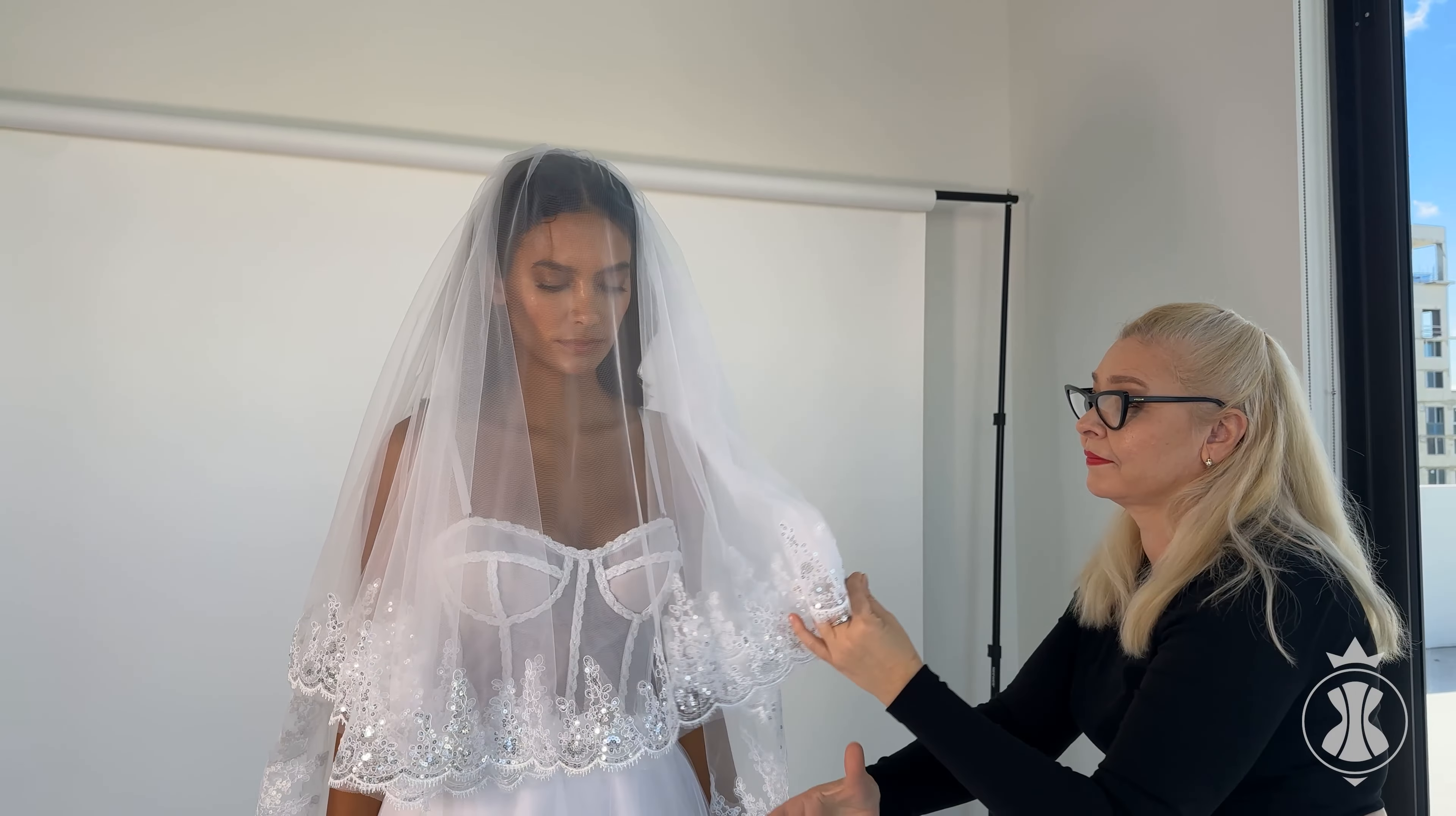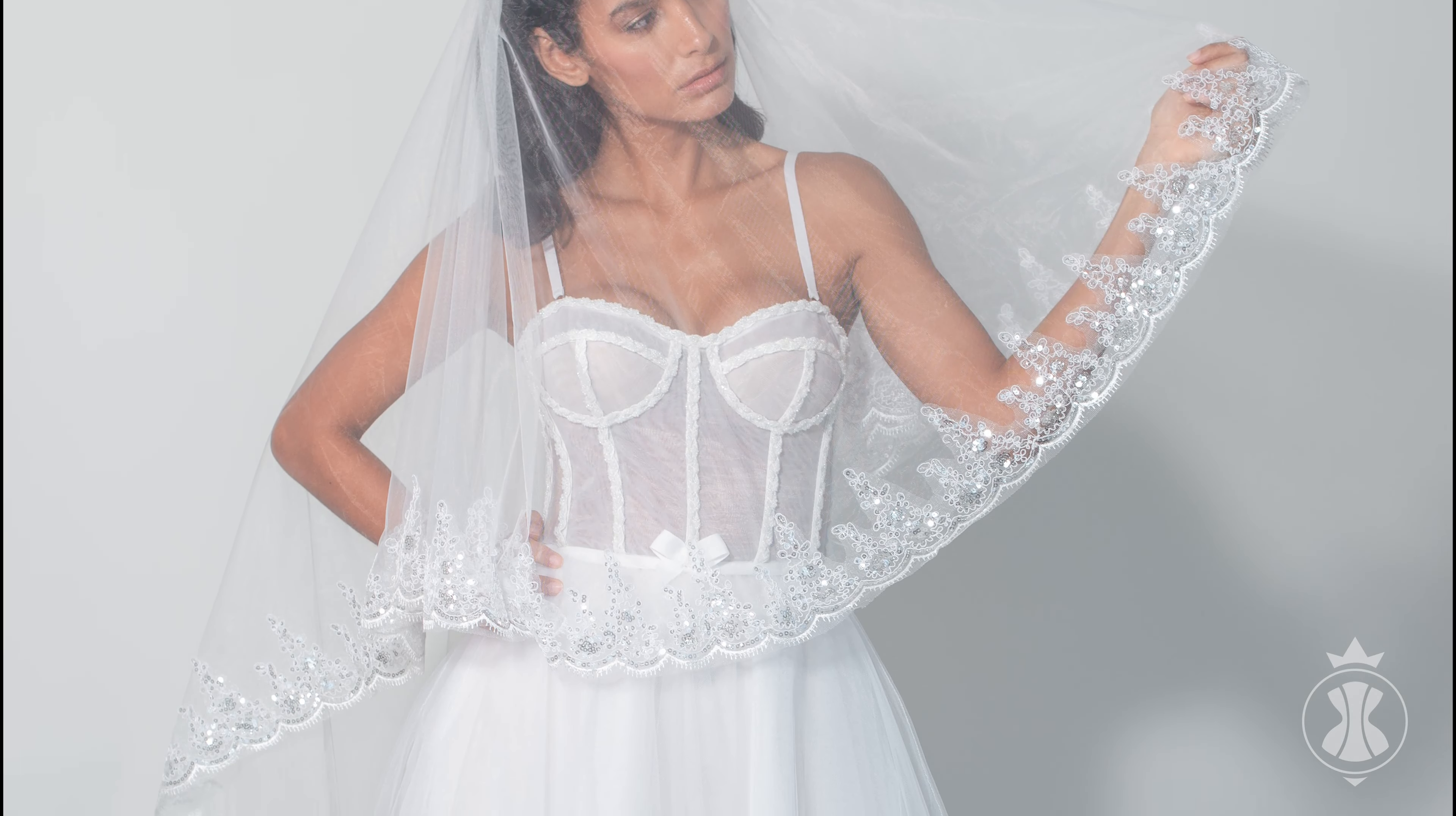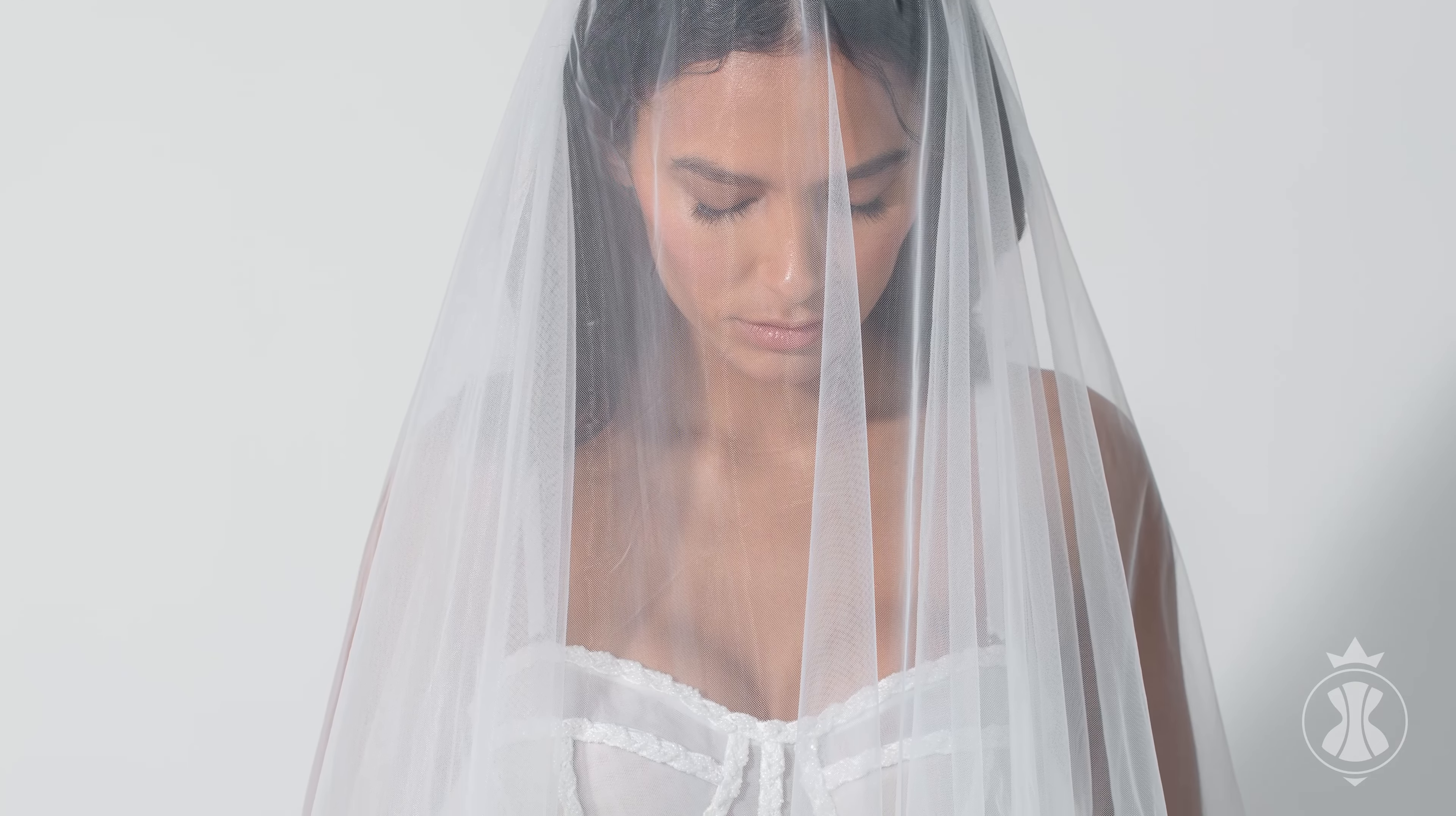Welcome to the much-requested tutorial on making a classic veil. The basic veil has two layers. The short layer, which is flipped forward during the ceremony, covering the face and shoulders. This layer is called the veil.